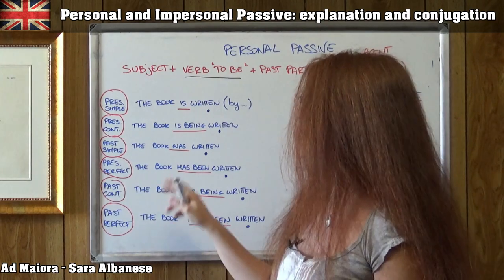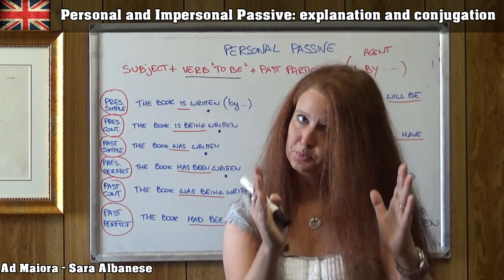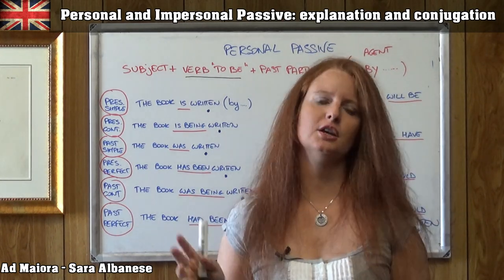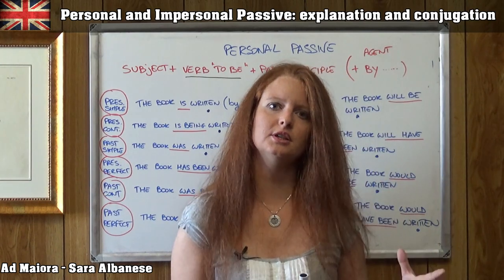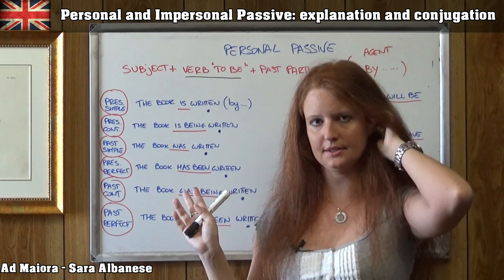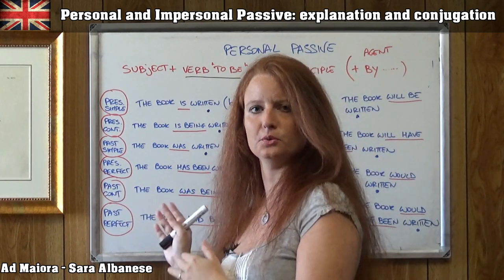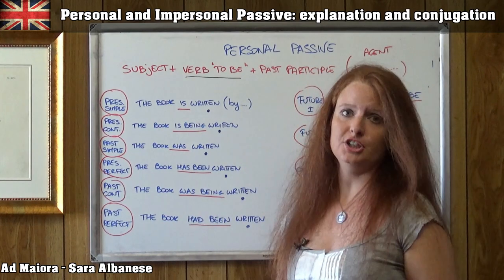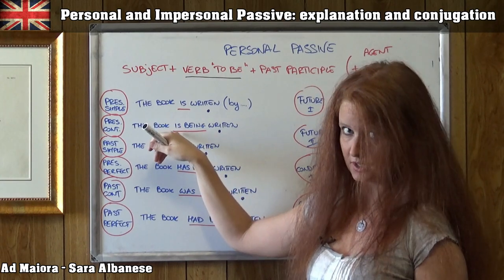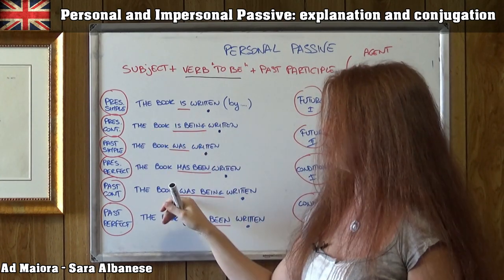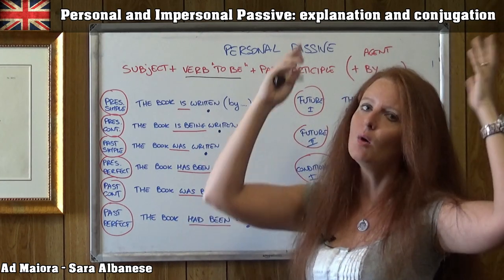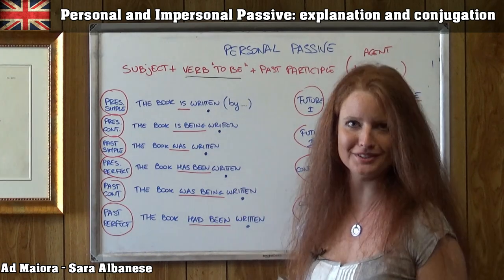Then the present perfect: 'the book has been written.' 'Has been' is the present perfect of the verb 'to be,' because the present perfect is formed by the auxiliary 'have' and the past participle of 'to be,' which is 'been.' Then the past continuous — it's the same as the present continuous, I just have to change 'is' into the simple past. So 'is' becomes 'was': 'the book was being written' — for example, while something happened in the past.